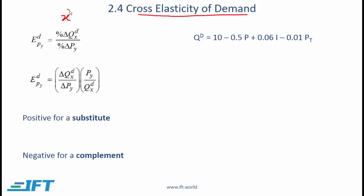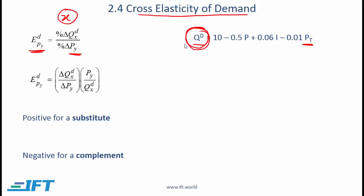The cross elasticity of demand concerns how the quantity of a given product X is impacted by the change in price of another product Y. Going back to our chairs and tables example: if the price of chairs stays the same and income doesn't change, but the price of tables changes, what is the impact on the quantity demanded of chairs? That's where cross elasticity of demand comes in.